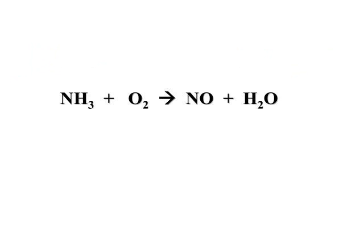Let's look at another reaction. The oxygen is spread out in several different compounds, which is again why we will leave it for last. We'll balance nitrogen first — one nitrogen on each side, so that's already balanced. Moving on to hydrogens: we've got three hydrogens here and two here. The lowest common multiple would be six, so putting a three in front of the water and a two in front of the ammonia gives us six hydrogens on each side.